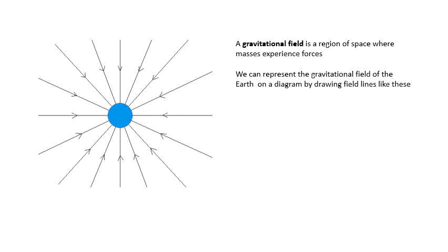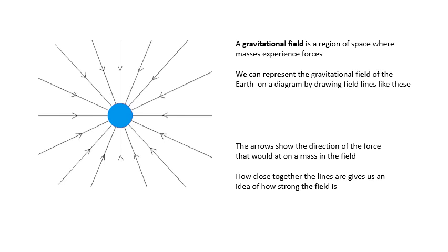We can represent the gravitational field of the Earth with a diagram by drawing field lines. These field lines tell us a lot about the field. They tell us that it's non-uniform because the closer together the lines are, the stronger the field. The arrows show the direction of the force that would act on a mass. That is the definition of the direction of the field. It's the direction of the force which would act on a mass in the field.